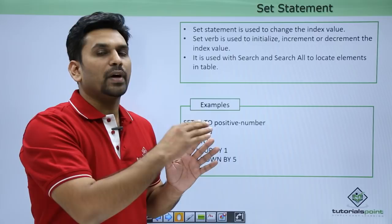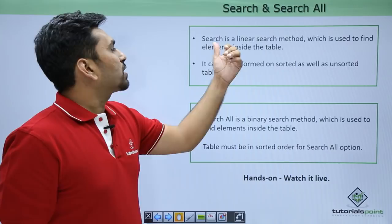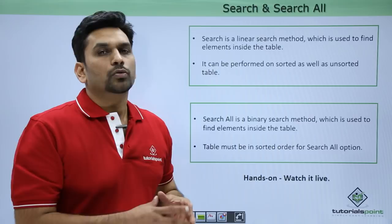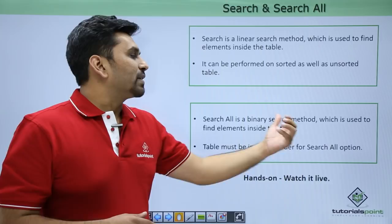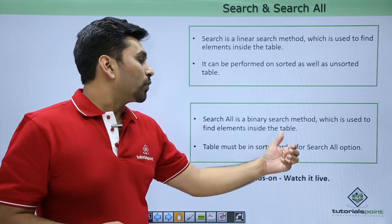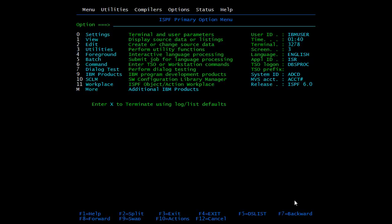SEARCH is a linear search method used to find elements inside a table. It can be performed on sorted as well as unsorted tables. SEARCH ALL is a binary search method used to find elements inside a table, but the table must be in sorted order for SEARCH ALL.